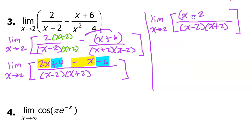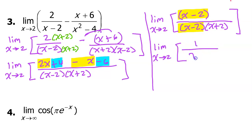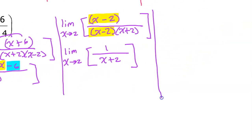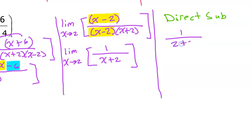We have a common factor of x minus 2 in the numerator and the denominator, so we can cancel those out. Now we write the limit as x approaches 2 of 1 over (x+2). Direct substitution gives 1 over (2+2), which is one fourth. That's your limit.